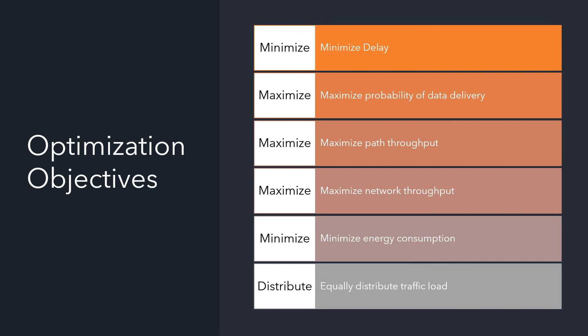Minimizing energy consumption is also an optimization objective, and there is also distributing traffic load. For traffic load, if a switch has too many queries to process, some packets are delayed. So even if a route is the best path, another path may be taken to minimize traffic load. Based on different optimization objectives, the path might differ, and different routing metrics lead the algorithm to select different routes.